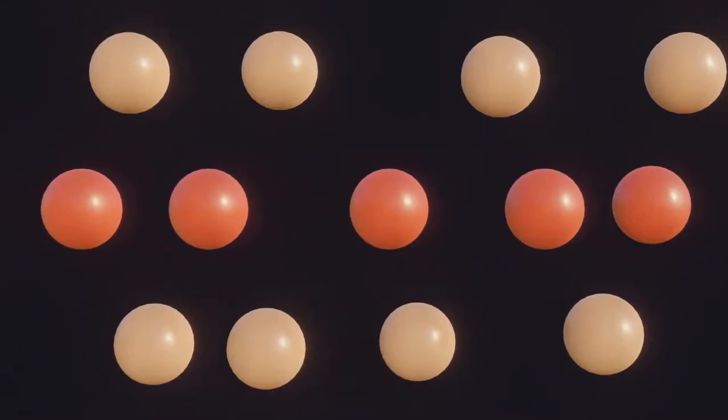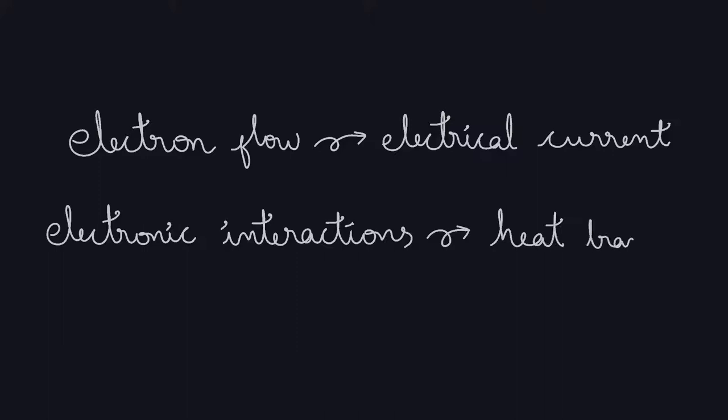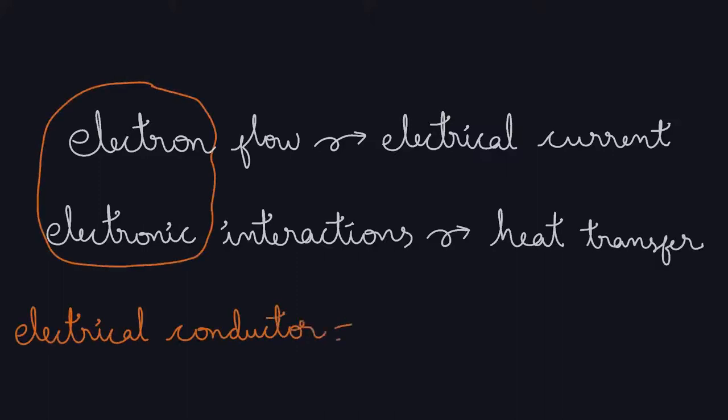Similarly with electrons. An interesting fact about electronic interactions is, if electrons flow in one direction, then electrical current is said to be flowing. Electronic interactions also help in heat transfer. This is the reason why a good electrical conductor is also a good heat conductor.